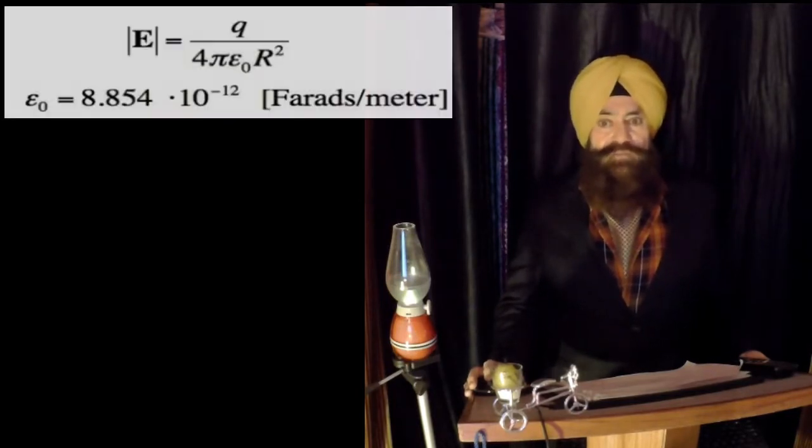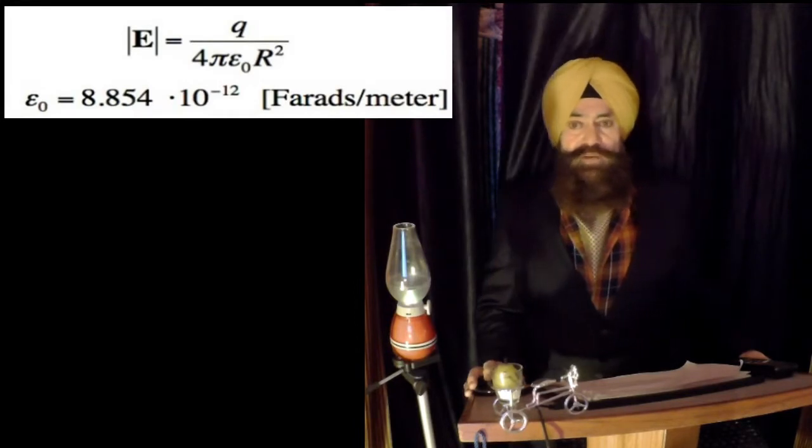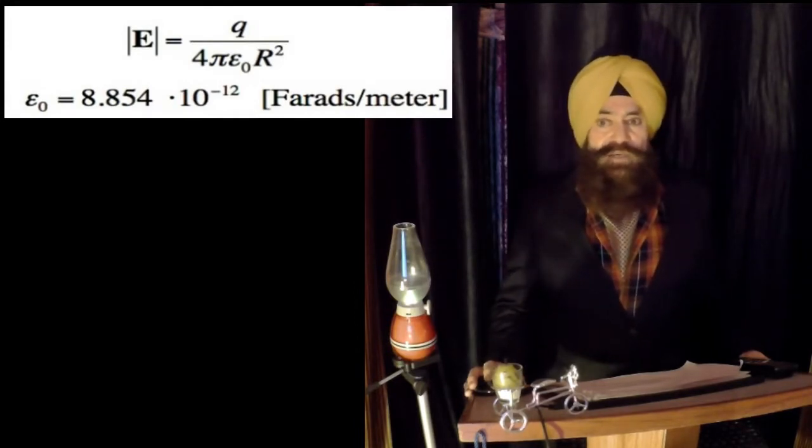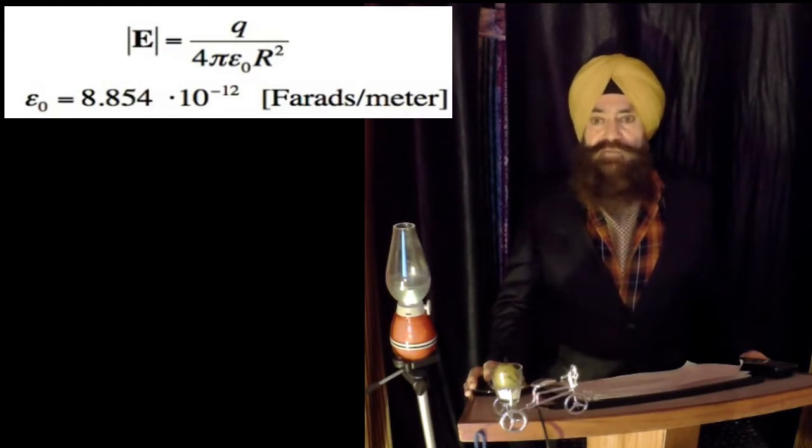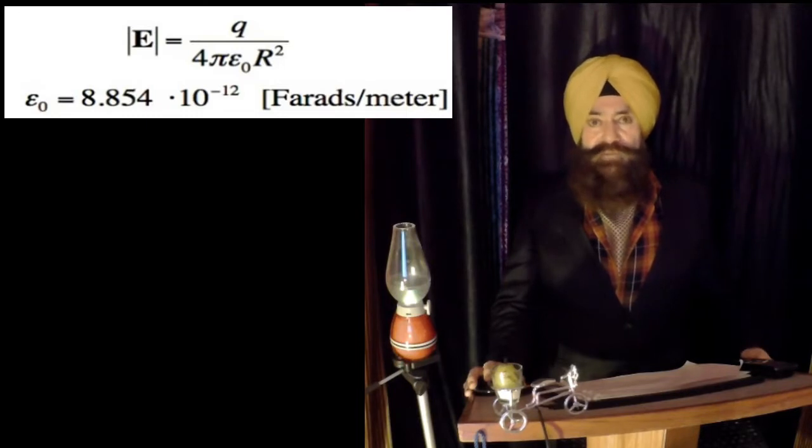Now, if we write the electrical field due to the source charge q, that is 1 over 4 pi epsilon 0 q by r square. And you know, value of epsilon 0, which is the permittivity of free space, is 8.854 into 10 raised to the power minus 12 farad upon meter.